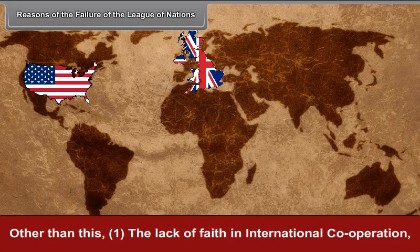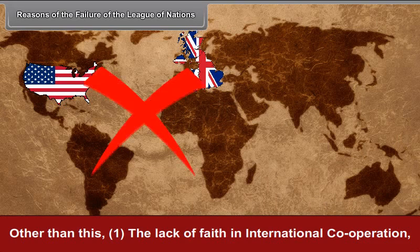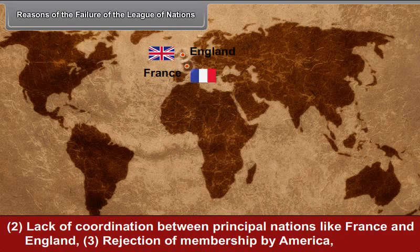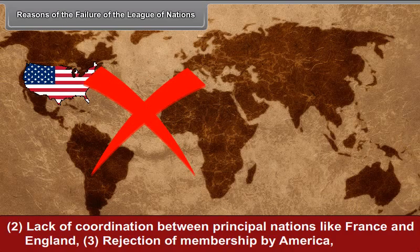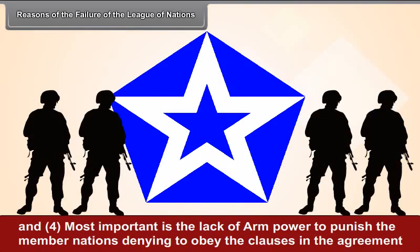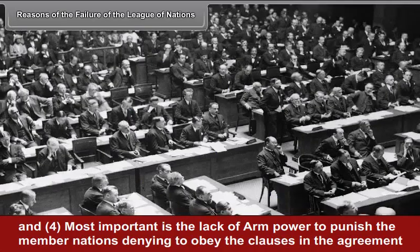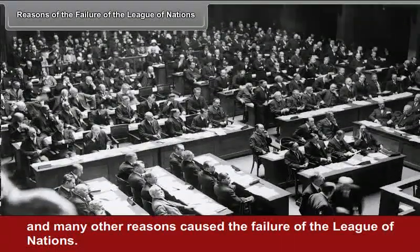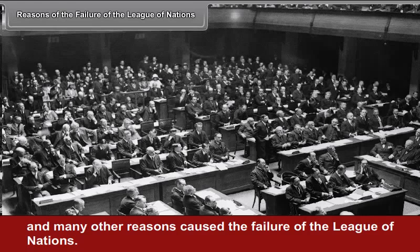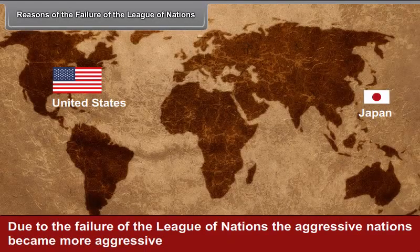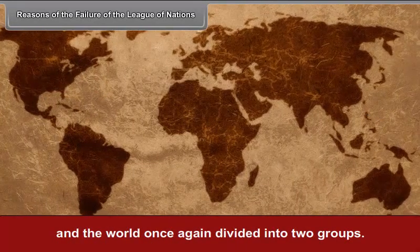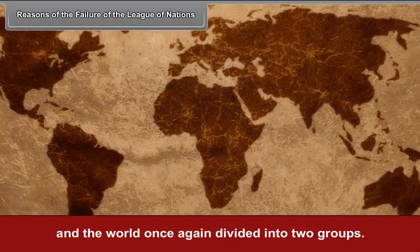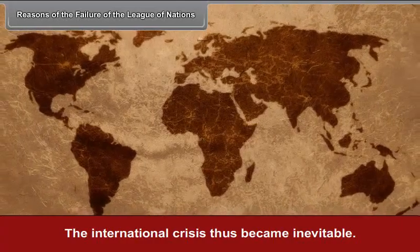Other reasons for failure included: the lack of faith in international cooperation; lack of coordination between principal nations like France and England; rejection of membership by America; and most importantly, the lack of armed power to punish member nations that denied obeying the agreement. Due to the failure of the League of Nations, aggressive nations became more aggressive, and the world once again divided into two groups, making international crisis inevitable.